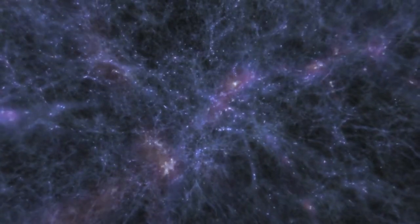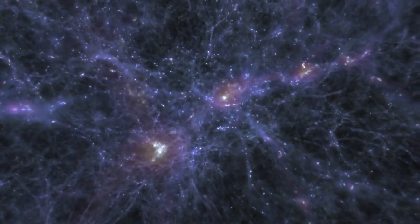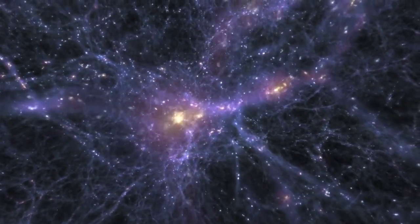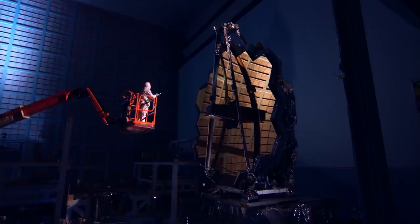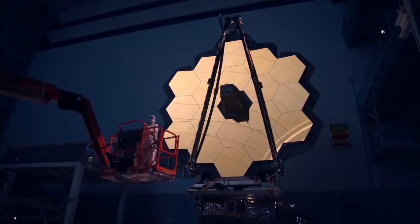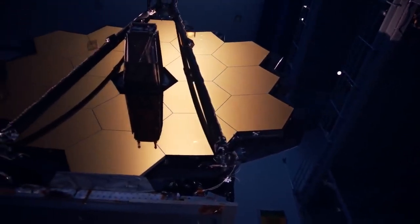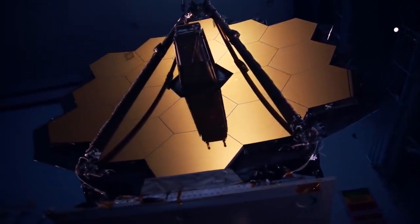The James Webb Space Telescope has taken another step toward launching science operations in the summer of 2022. After weeks of alignment, NASA completed focusing the James Webb Space Telescope's primary mirror on March 11th, exceeding the initial objective and resulting in an image of star 2MASS J17554042+6551277 released on March 16th, 2022.